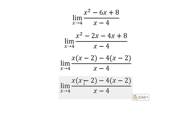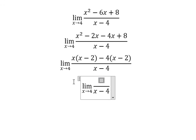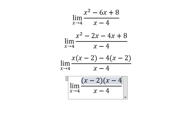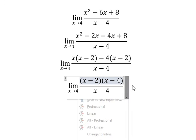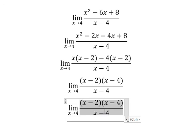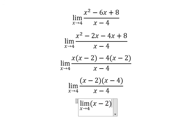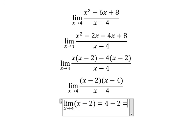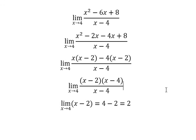We have x minus two and x minus two — we can do another factorization. Then we simplify by x minus four. You get x minus two, then we put number four in here. You get number two. This is the end — thank you for watching.